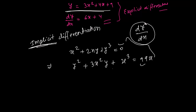To perform implicit differentiation, you need a good understanding of the power rule, sum rule, product rule, and quotient rule — all rules you've already learned. You should also be able to differentiate with respect to any given variable. Let's take the example x² + 2xy + y³ = 0 and find dy/dx.